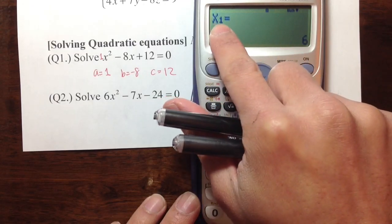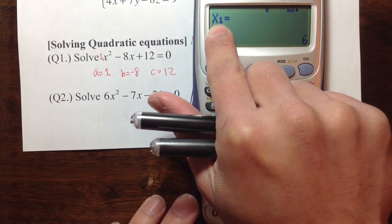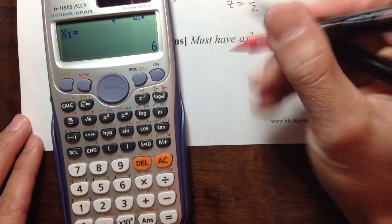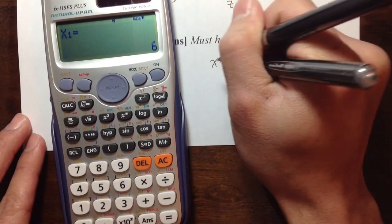Then press another equals sign, and I get x₁. That's the first answer, which is 6. So I can say x = 6.